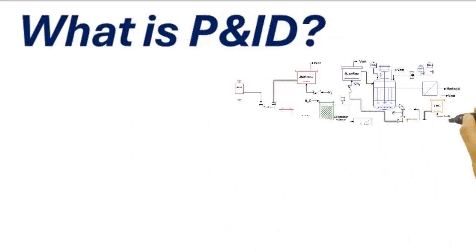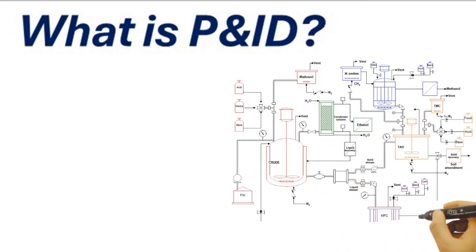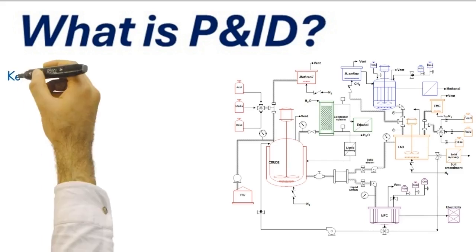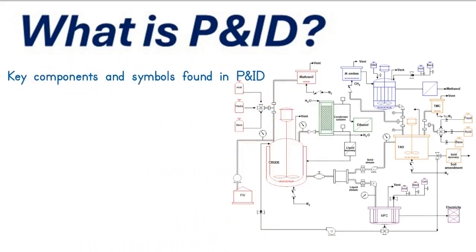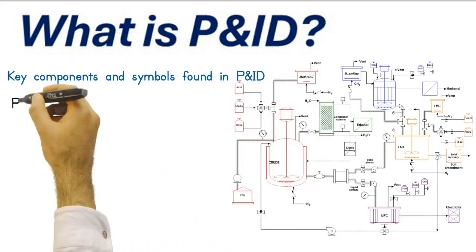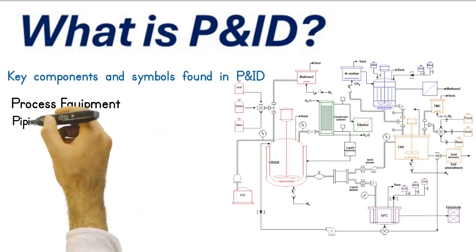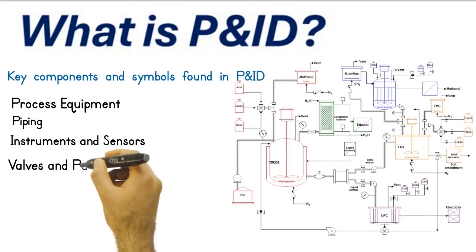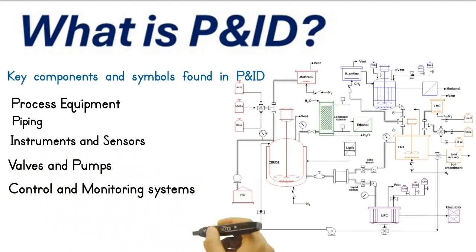What is a P&ID? P&ID stands for Piping and Instrumentation Diagram. It is a detailed schematic diagram showing the interconnected equipment, instrumentation, and piping-related components of a physical process flow. Key components and symbols found in a P&ID include process equipment, piping, instruments and sensors, valves and pumps, and control and monitoring systems.